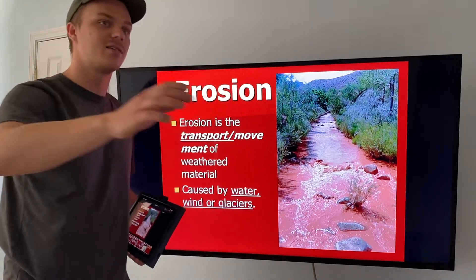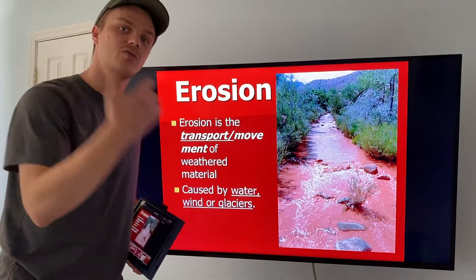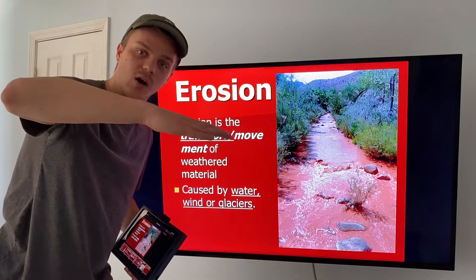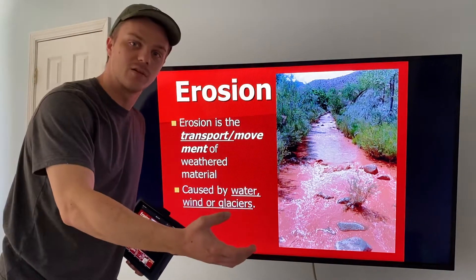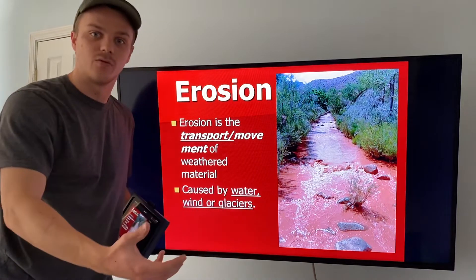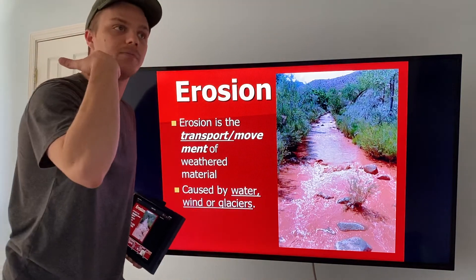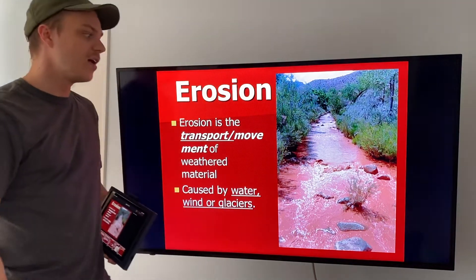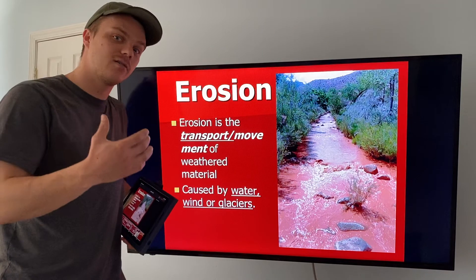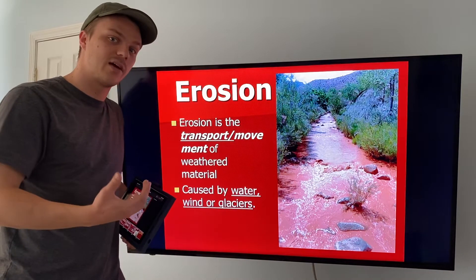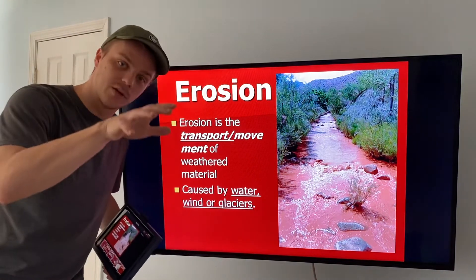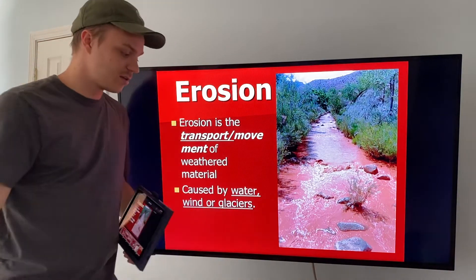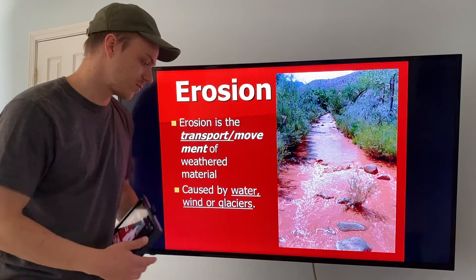The water continues moving fast and is able to carry these sediments, but eventually it slows down — usually where the terrain goes from steep to gradual, and where it enters larger bodies of water like lakes, ponds, oceans, or seas. When water slows down, as we saw on the graph, it can't carry as many things and they drop to the bottom, forming a depositional feature.